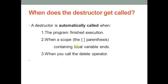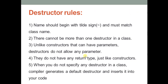The destructor is called automatically when the program finishes execution, or when a scope — the parentheses containing local variables — ends, i.e., when the compiler comes out of the function or main function after executing return 0. It is also called when you use the delete operator, which destroys dynamically allocated memory space (created with the new operator). For now, just remember that the destructor does not need to be called explicitly — it is called automatically.